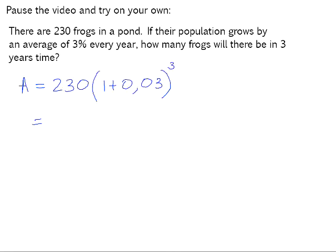So 230 times 1 plus 0.03 to the power of 3 is equal to 251.3. Now, you can't have .3 of a frog because you're dealing with living things. So the context of the question means that we need to round this figure off to the nearest whole number of 251.